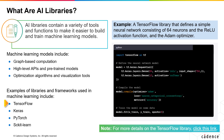Keras is a high-level neural networks API that runs on top of TensorFlow, designed to make it easy to build and train deep learning models. It's known for its simplicity and ease of use, making it a popular choice for beginners.